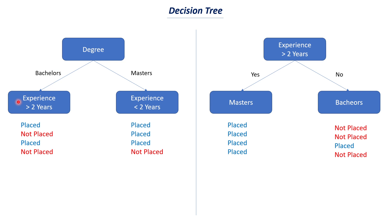So in the first tree: two placed and two not placed in one branch, and three placed and one not placed in the other. Using this decision tree, if a person has completed masters, there is a high probability they will get placed. If they completed bachelors, the probability is around 50%. We used the same dataset and features but interchanged the position of the features — degree as root in tree one, experience as root in tree two. We need to determine which decision tree is best, and this is where we use entropy, information gain, or Gini impurity.